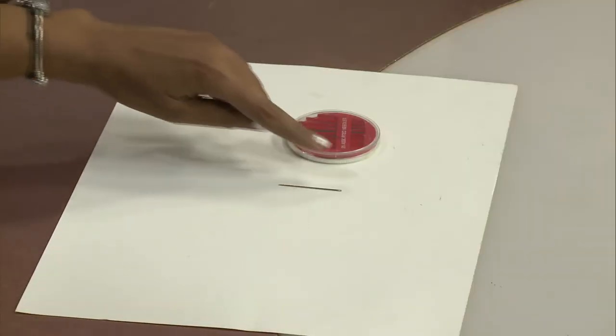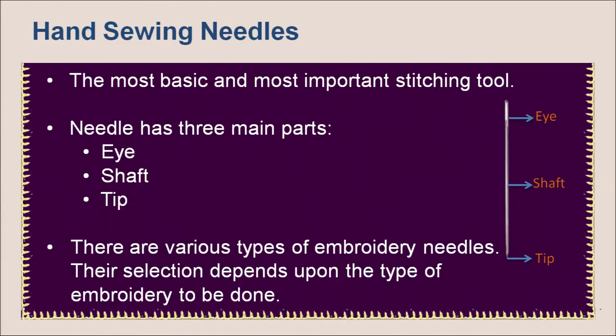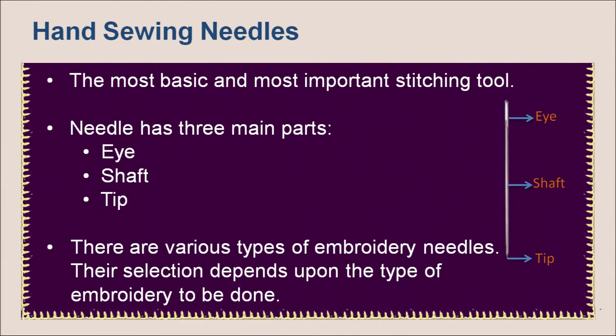Thank you so much ma'am for introducing us to some of the most popular embroidery arts of India. It is fascinating to know about the rich textile traditions of our country. As we have already got an idea about some of the popular embroideries, we will now discuss the various equipment and materials required for embroidery. The most basic tool required for embroidery is the needle. A needle has three main parts: eye, shaft and tip. There are various types of embroidery needles available in the market, and their selection depends upon the type of embroidery to be done.